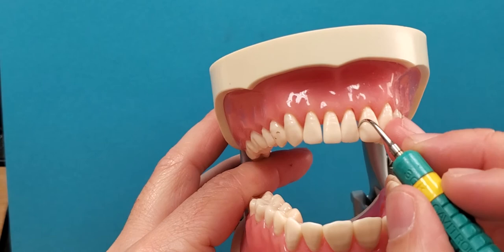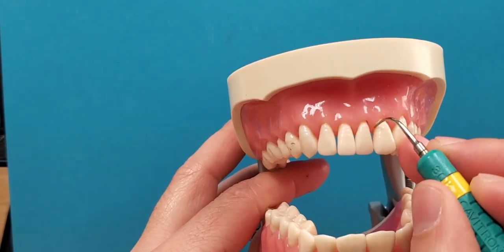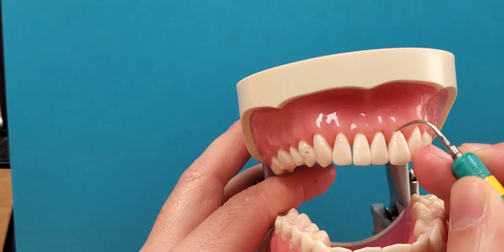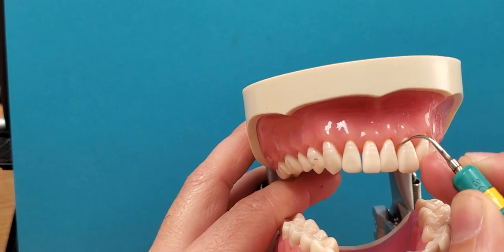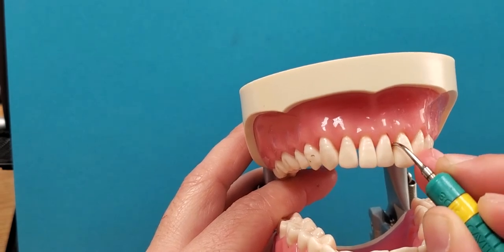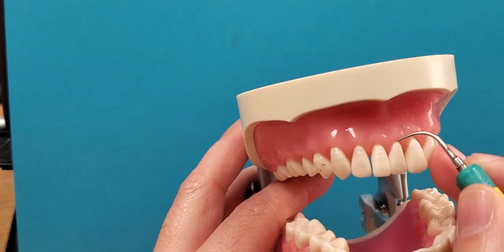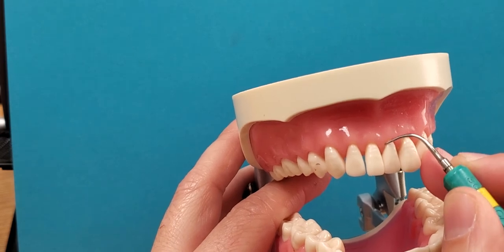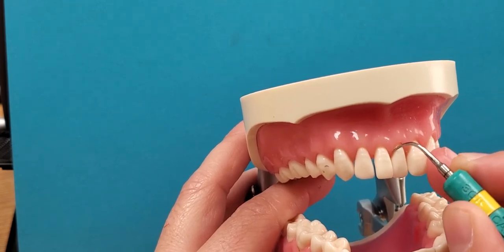So for the away surfaces you're going to go to 12 o'clock and again can only be used really interproximally. You can still come around the line angle.